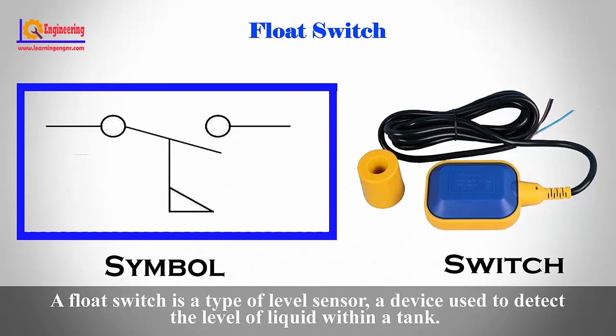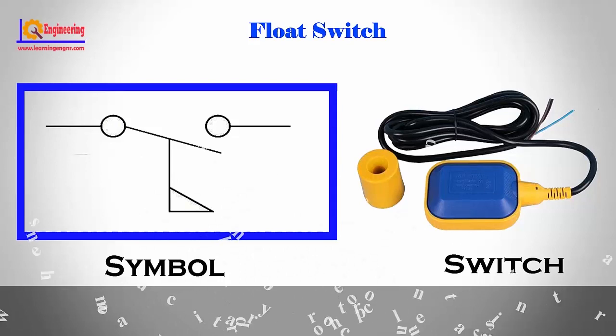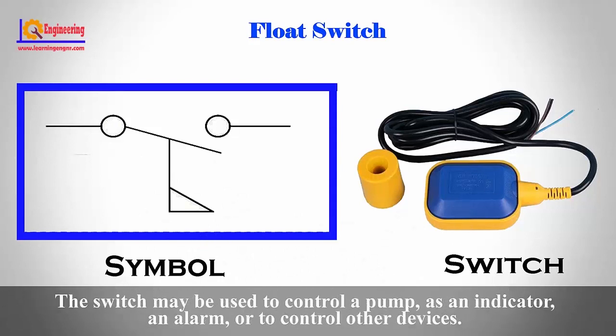Float switch. A float switch is a type of level sensor — a device used to detect the level of liquid within a tank. The switch may be used to control a pump, as an indicator and alarm, or to control other devices.